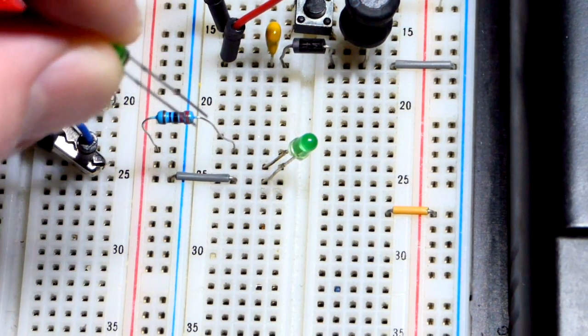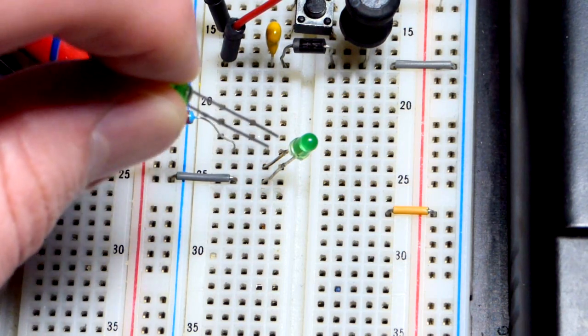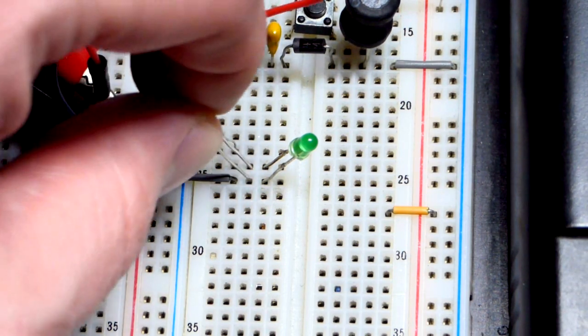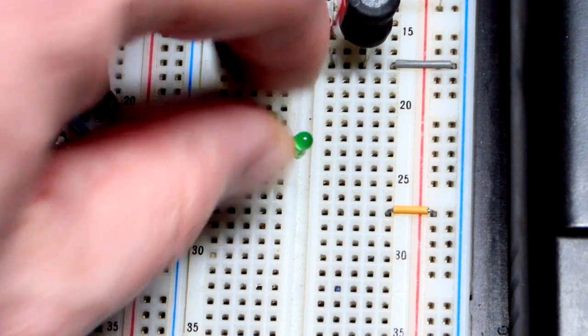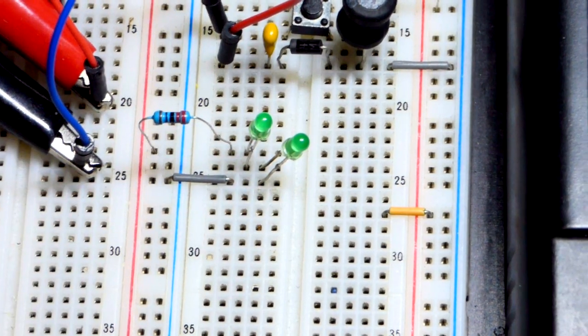Long lead, the anode, to the resistor. Short lead, the cathode, to the anode of that one. And then the cathode, short lead of that one. You need to put them in the right direction for them to conduct.